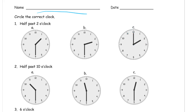At half past, the minute hand is going to be touching the 6. At just regular o'clock, it's going to be touching the 12. And it's the short hand — the hour hand — that's going to be pointing sometimes in between two numbers.